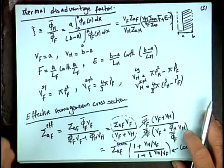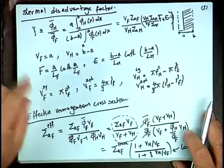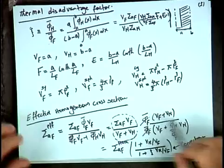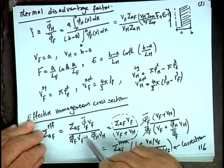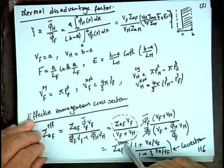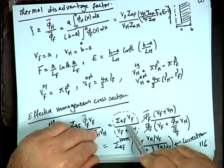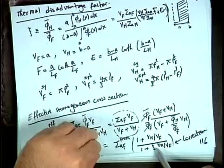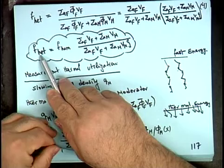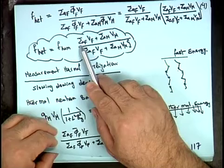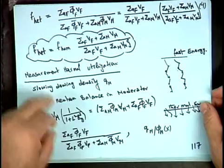The thermal disadvantage factor tells us how the average flux in the moderator relates to the average flux in the fuel. Since the moderator flux is higher than the fuel flux, ξ should be greater than 1. We then use this factor so that the effective homogenized cross-section is not just a volume average but is the homogeneous utilization factor multiplied by a function containing the thermal disadvantage factor.